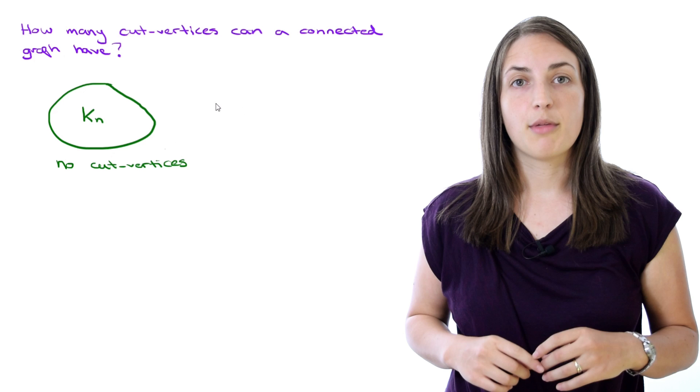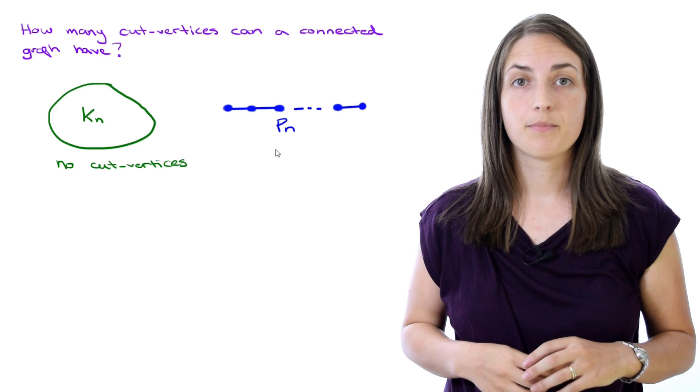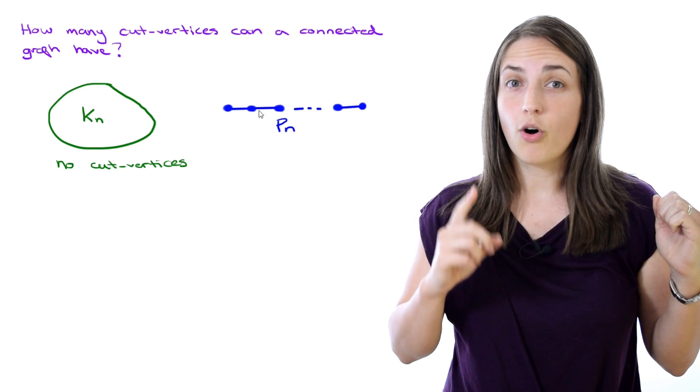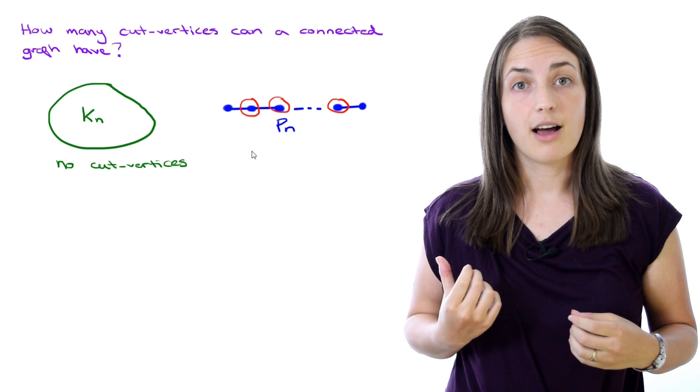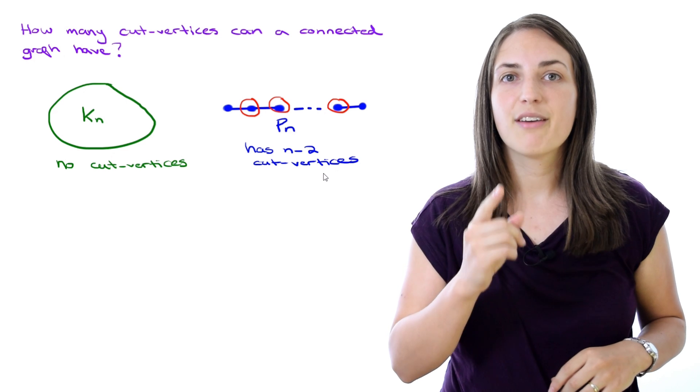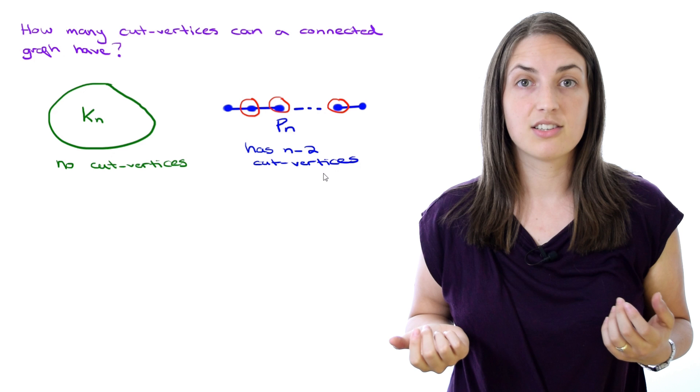On the other extreme, think about a path on n vertices where n is at least 3. Then neither end vertex are cut vertices but all the interior ones are cut vertices, so that graph has n minus 2 cut vertices. Could you ever have a graph which is connected and has more than n minus 2 cut vertices?